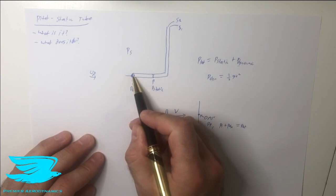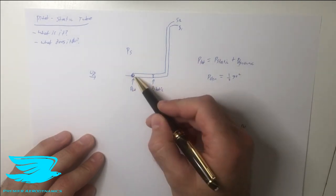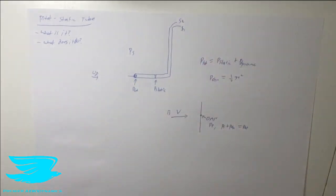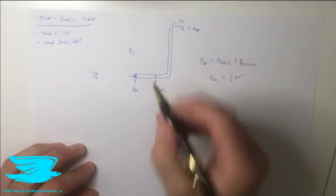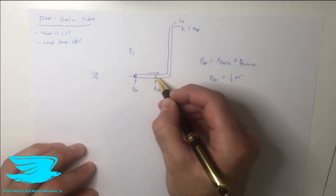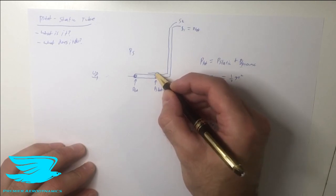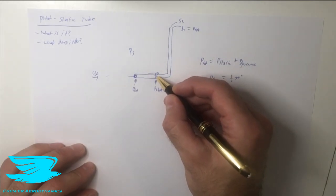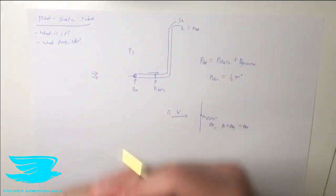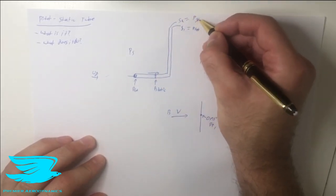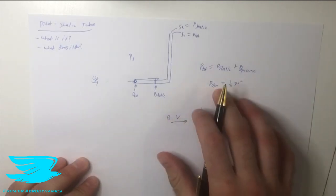That's how the pitot-static tube works. The total pressure at the front is felt by the flow being crammed straight in, and sensor one reads that total pressure. The holes around the side are only seeing the static pressure, because the flow is traveling parallel to the tube — so no free stream velocity is being directed into those holes. Depending on the pressure difference, flow will either come in or out a little, meaning those side holes measure the static pressure.